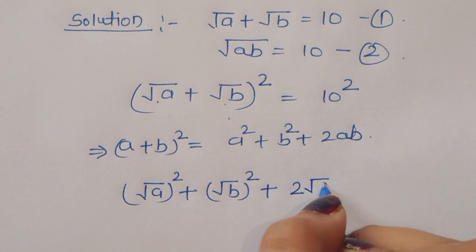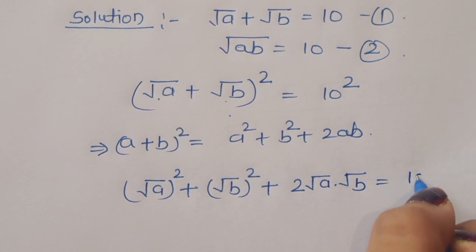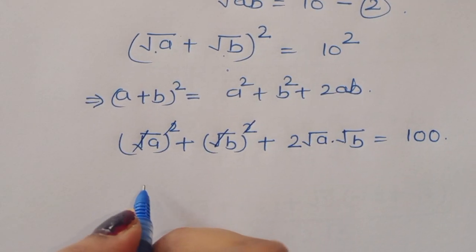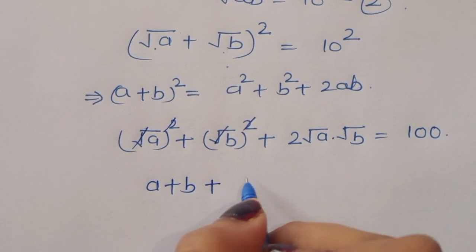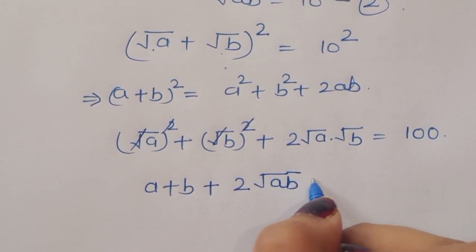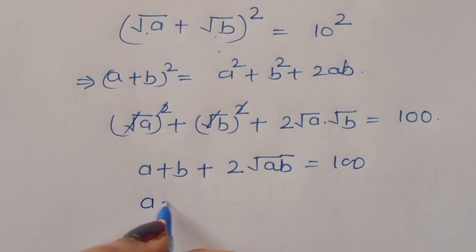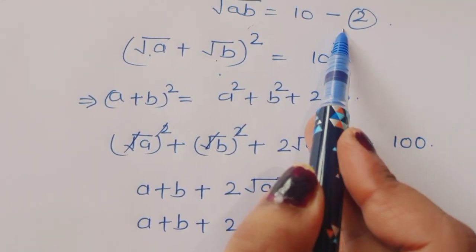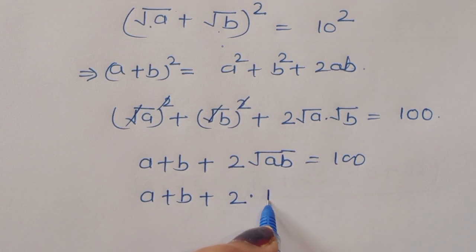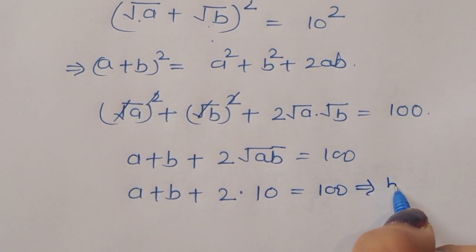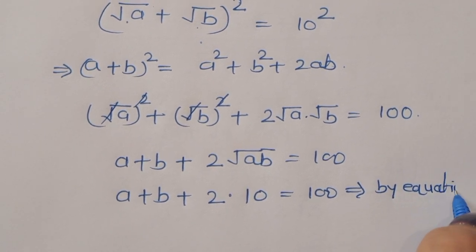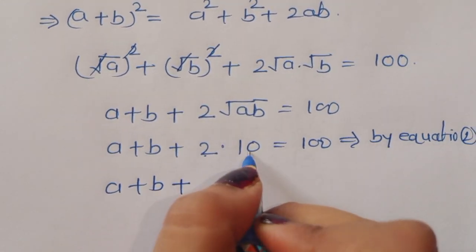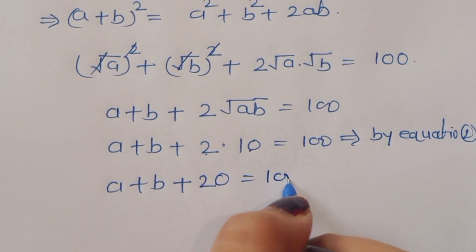Using this formula here: square root of a whole squared, plus square root of b whole squared, plus 2 times square root of a times square root of b, is equal to 100. The squares cancel the square roots, giving us a plus b plus 2 times square root of ab equals 100. Now square root of ab equals 10 by equation 2, so we can write 2 times 10.